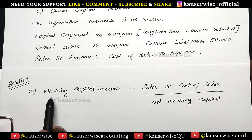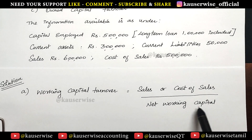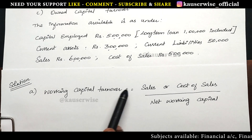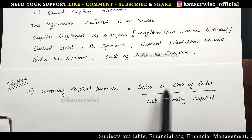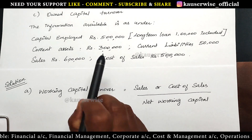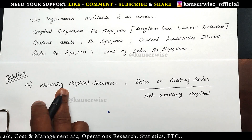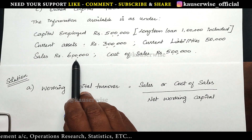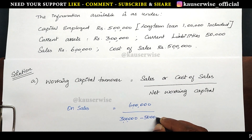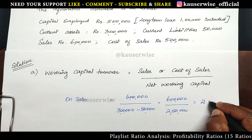We are going to calculate the first one, that is working capital turnover. The formula is sales or cost of sales divided by net working capital. We have both sales and cost of sales in our problem. Working capital is calculated as current assets minus current liabilities. Working capital turnover on sales: 6 lakhs divided by net working capital — current assets 3 lakhs minus current liabilities 50,000 — equals 2.4 times.